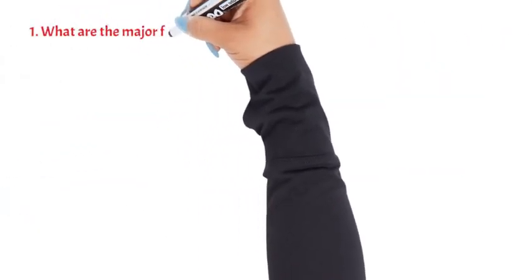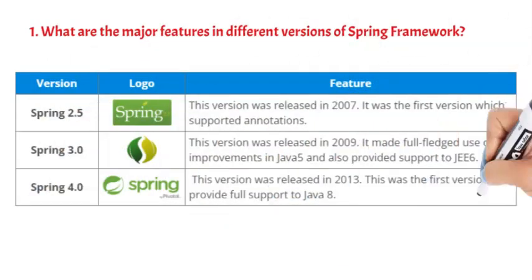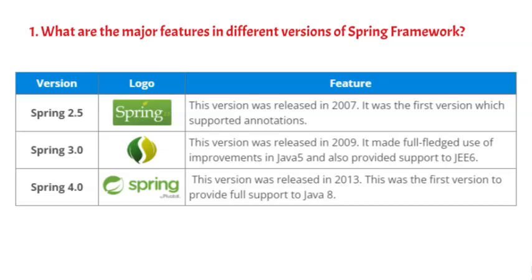Question 1: What are the major features in different versions of Spring Framework? Spring 2.5 was released in 2007 and was the first version which supported annotations. Spring 3.0 was released in 2009 and made full-fledged use of improvements in Java 5, and also provided support to Java 6. Spring 4.0 was released in 2013 and was the first version to provide full support to Java 8.